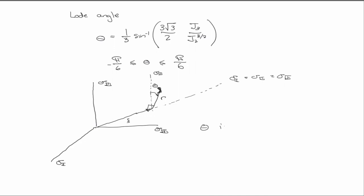So this is actually a right angle right here. And so, theta is controlled by the relationship of the intermediate principal stress, that is sigma 2, to the others, sigma 1 and sigma 3.